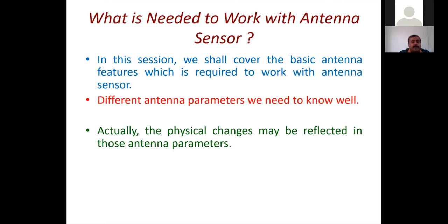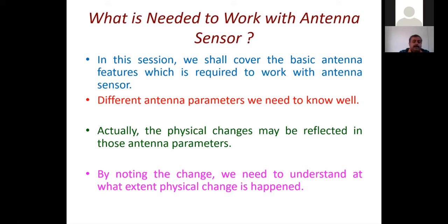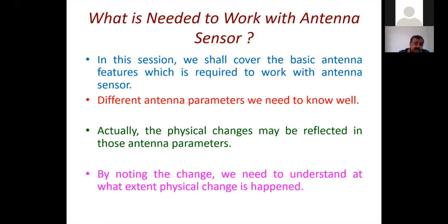In this session, I am trying to cover basic antenna features required for antenna sensing. The important parameters we need to know well include the reflection coefficient, radiation pattern, and radiation factors. Physical changes to be sensed will be reflected in changes in these antenna parameters. Depending on how much the antenna parameter changes, you can predict and calibrate how much physical change has occurred.